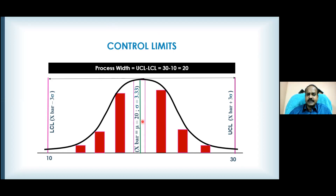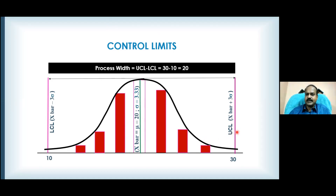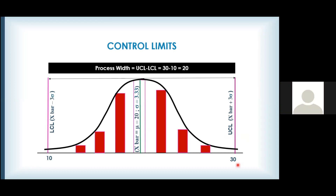The customer target is generally denoted by mu — here our target is 20 minutes. The actual average found from the data is denoted as x-bar. With average of 20 and sigma of 3.33, I immediately calculate the control limits: average plus or minus 3 sigma. Three times 3.33 is approximately 10, so the upper control limit is 30 and the lower control limit is 10.